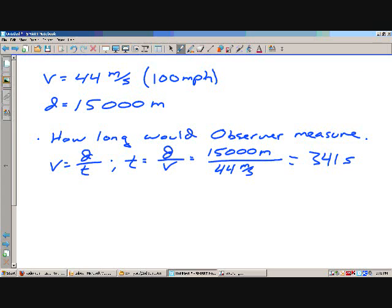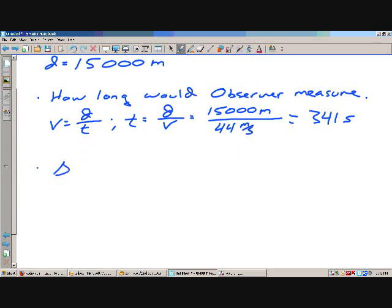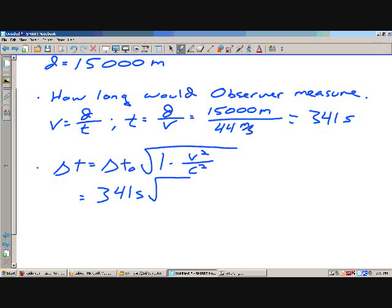Now, let's look at it from the object's perspective, in the object's time frame. From the object's time frame, we have to use Einstein: 1 minus V squared over C squared. We're going to plug in 341 seconds, T naught is the observer's time period. 1 minus 44 squared over C. And remember, the speed of light is 3 times 10 to the 8th squared.